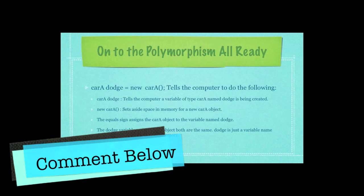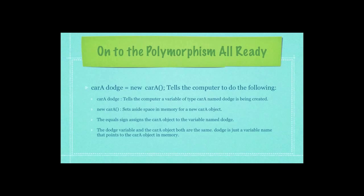On to polymorphism. You can see here an example in which I created a new object of type Dodge, but still used the original carA class to define it. carA, followed by the object you're creating named Dodge, tells the computer a variable of type carA named Dodge is being created. After the equals sign, new carA sets aside space in memory for a new carA object. The equals sign assigns the carA object to the variable named Dodge.